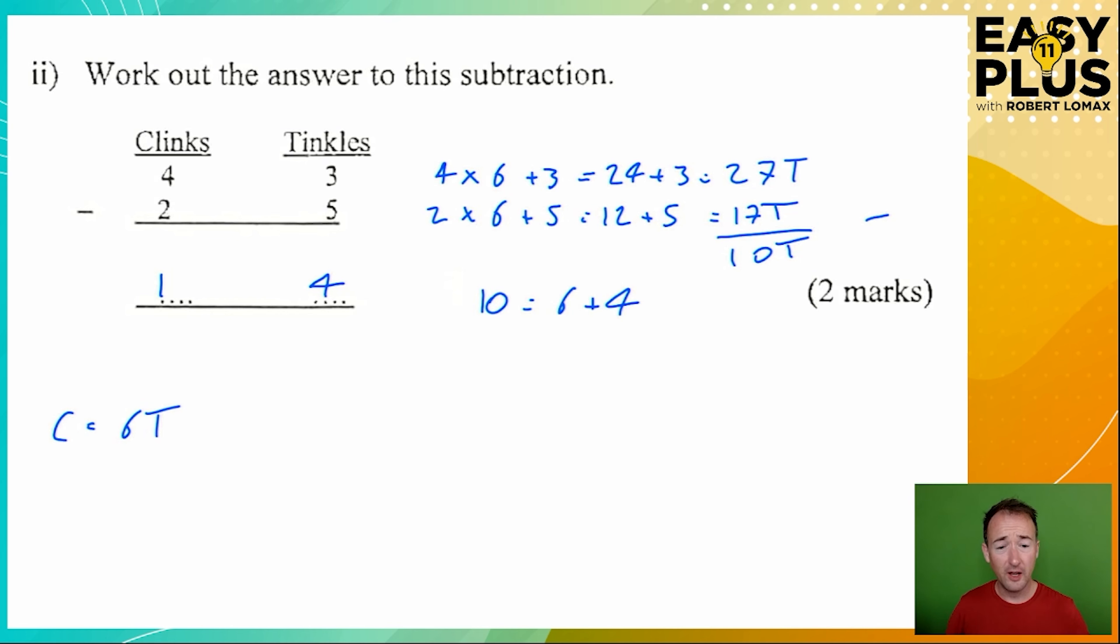You could also do this using the column subtraction as it's set up originally. Let's have a look. We can't do 3 minus 5, because 5 is greater than 3. So we need to carry to make 3 larger. If we change 4 clinks into 3 clinks, that means that we need to carry across 6 tinkles, because 6 tinkles are equivalent to the 1 clink that we've taken from the left-hand column.